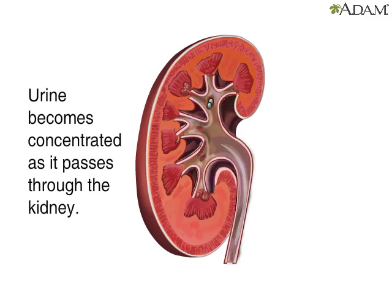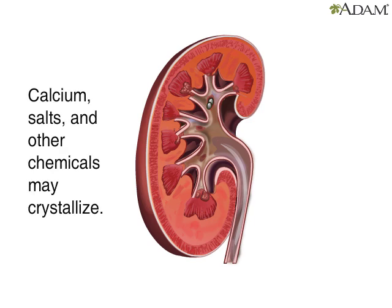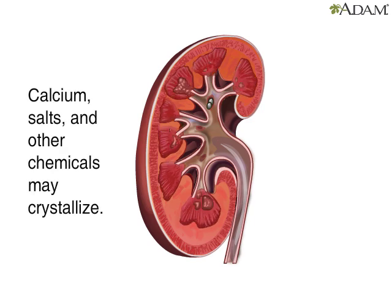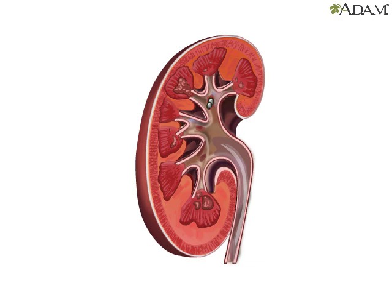As urine passes through the kidneys, it can become very concentrated. When the urine becomes too concentrated, calcium, uric acid salts, and other chemicals dissolved in the urine can crystallize, forming a kidney stone or renal calculus.